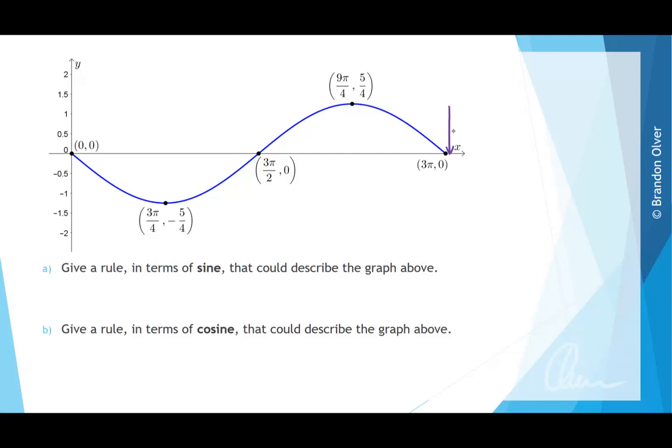So the amplitude is the maximum displacement away from the mean value of the function. So y equals 0 is the mean value, and it goes up to a maximum of 5 on 4, and down to a minimum of negative 5 on 4. So the amplitude is equal to 5 divided by 4.